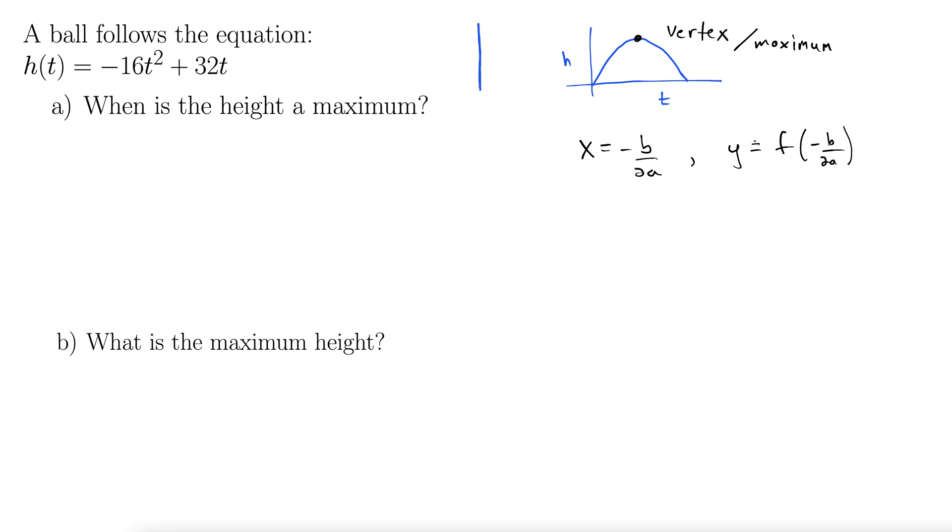So let's do it for this example in particular. So this ball follows the equation h(t), so this is height equals negative 16t squared plus 32t. And let's do height, let's do that in feet. And just to be realistic, let's make time in seconds.